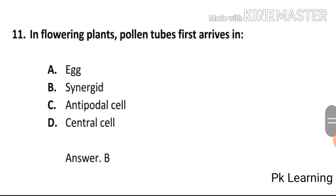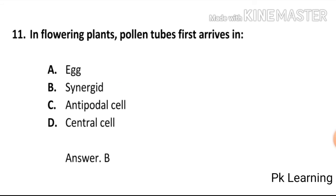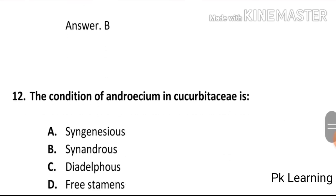In flowering plants, the pollen tube first arrives in: A) egg, B) synergid, C) antipodal cell, D) central cell. The answer is B, synergids. The pollen tube first arrives in synergids. B is the correct option.